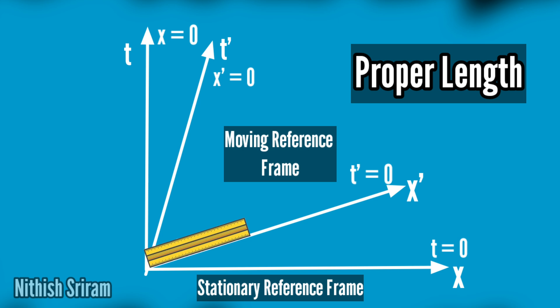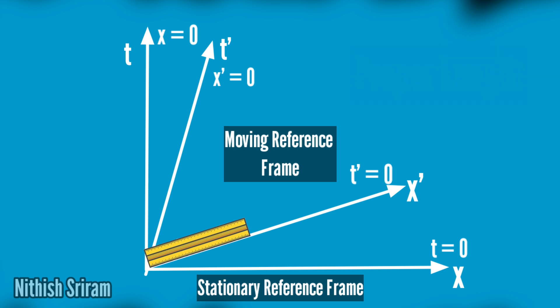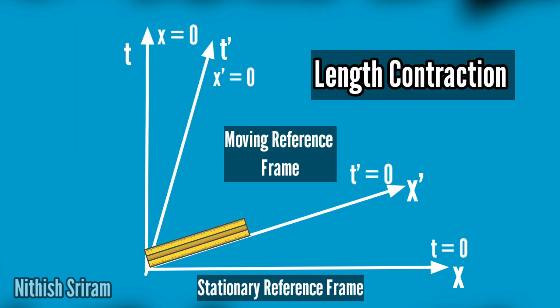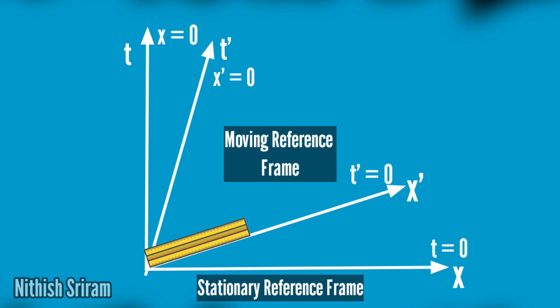If you want to see the stationary frame, when the length is measured, it is measured by the proper length — that is the right size of the proper length. This is length contraction. The moving frame, when observed from the rest frame, shows how the moving frame contracts in length.